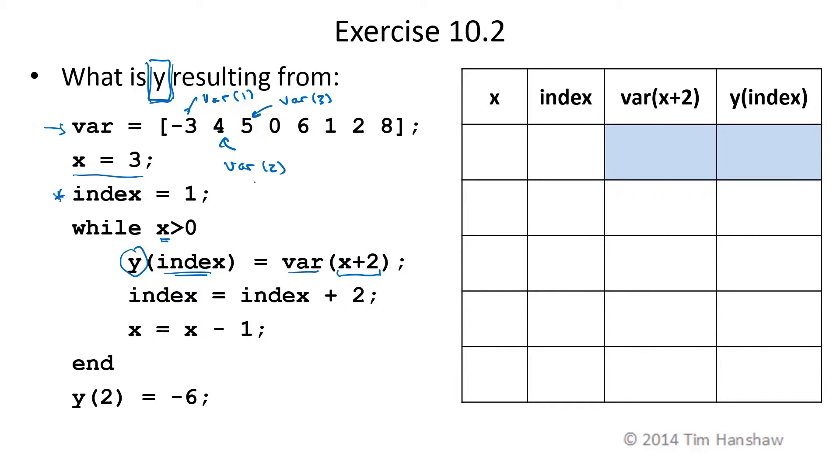Before we enter the loop, X is equal to 3 and index is set to 1. We check to see if X is greater than 0. 3 is greater than 0. So we enter this loop and start doing these statements.